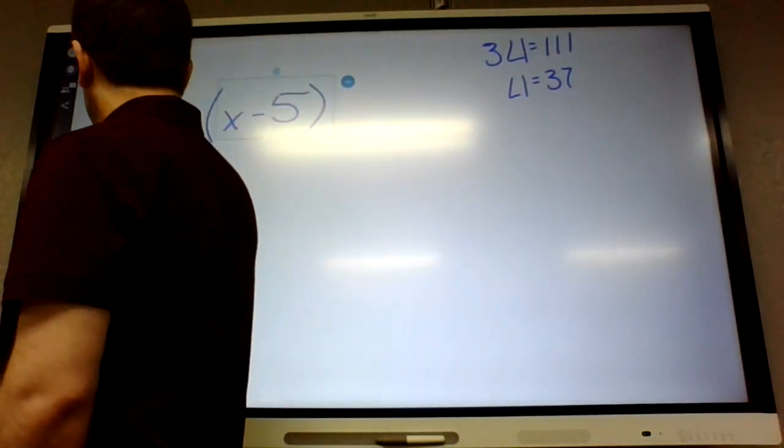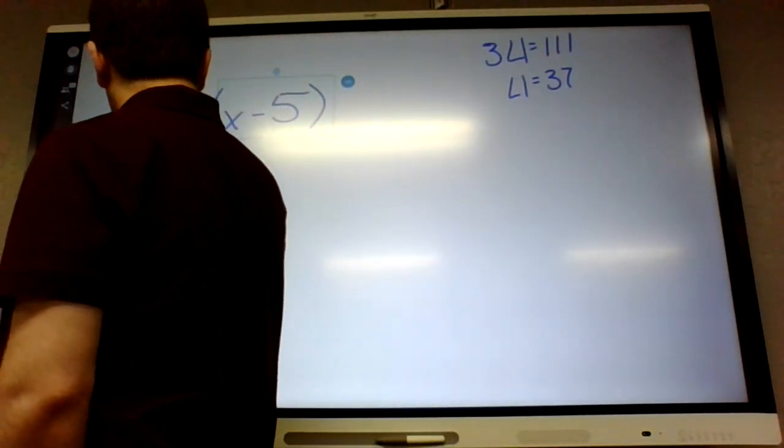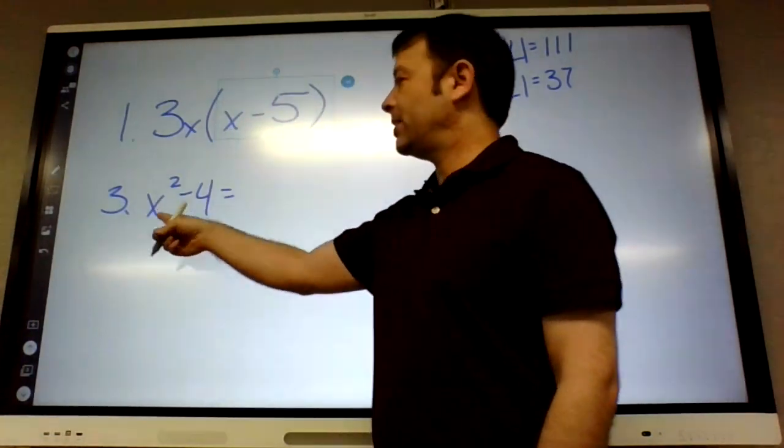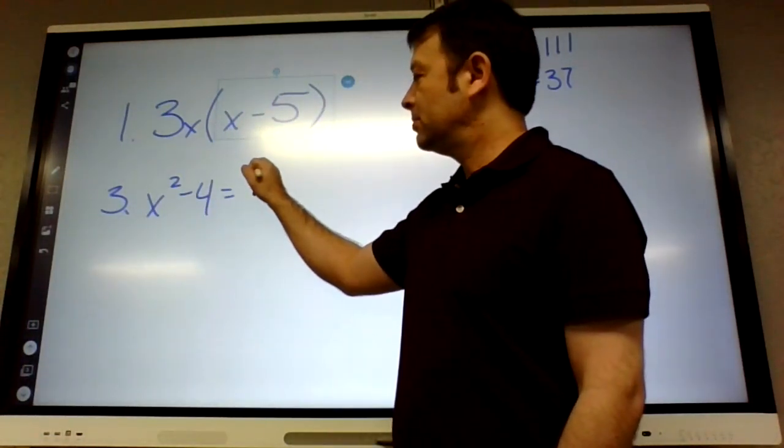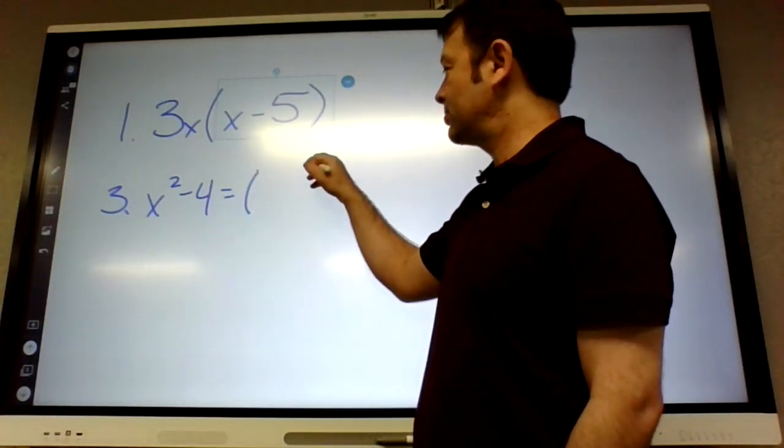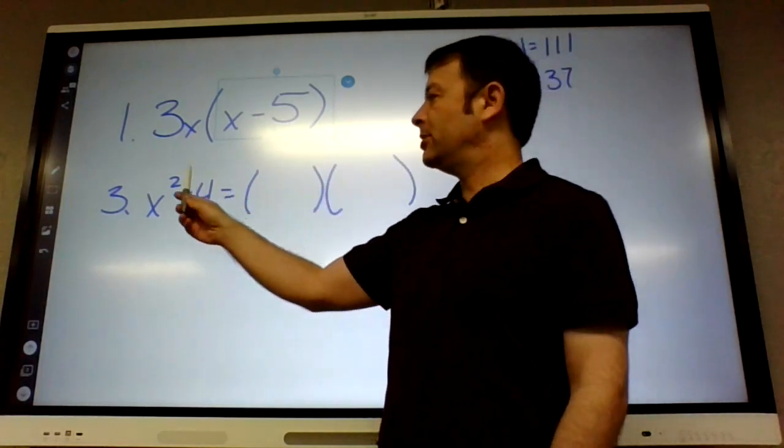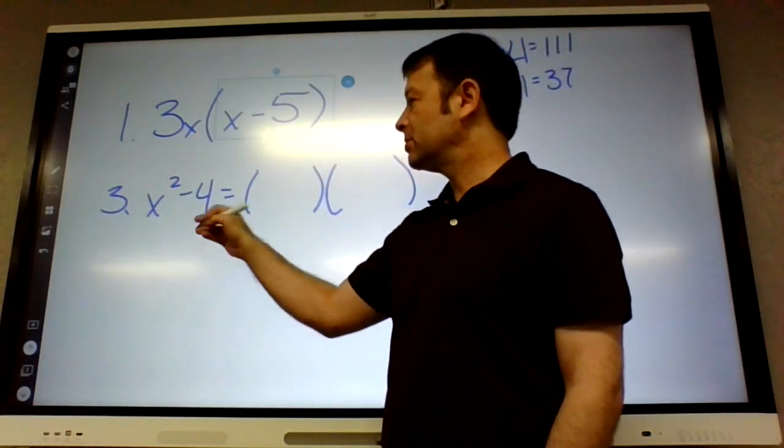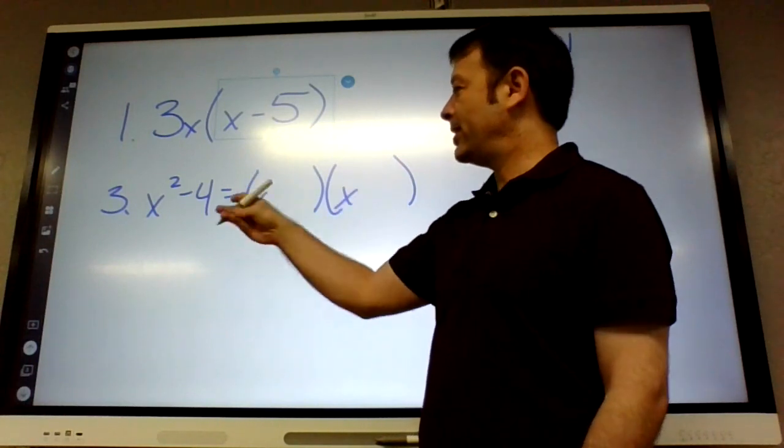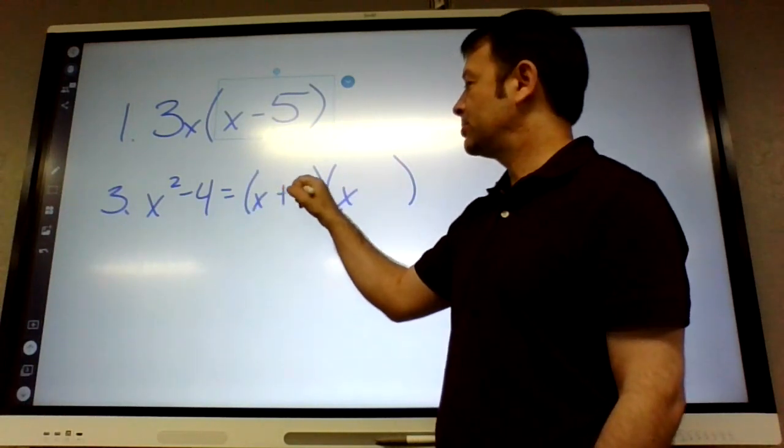Number 3. X squared minus 4. What's that? Can we take anything out? No. Is it a square minus a square? Yes. So what goes in the front? X. What goes in the back? Plus 2 minus 2.